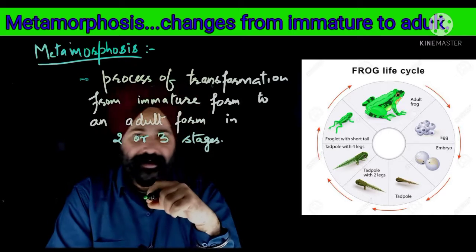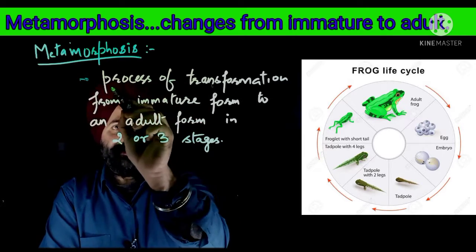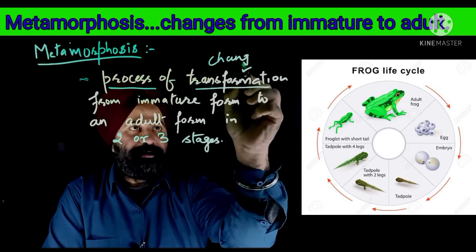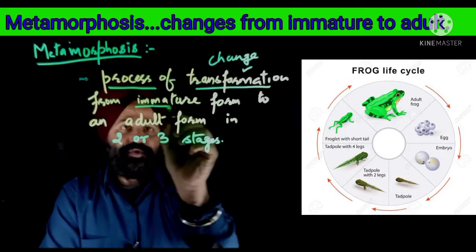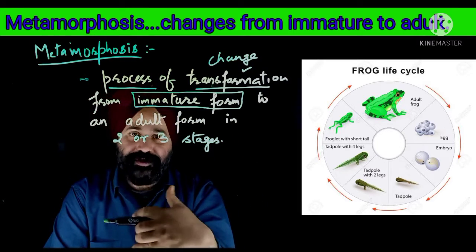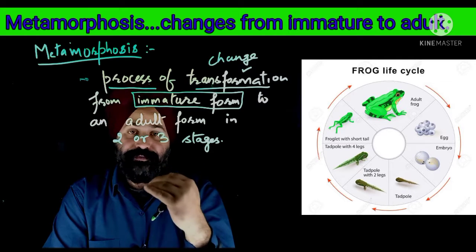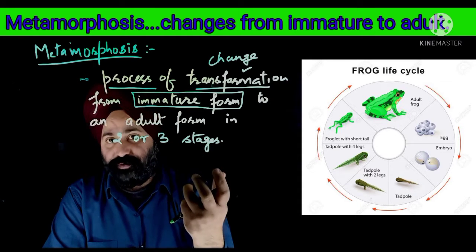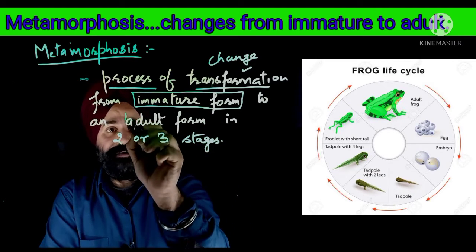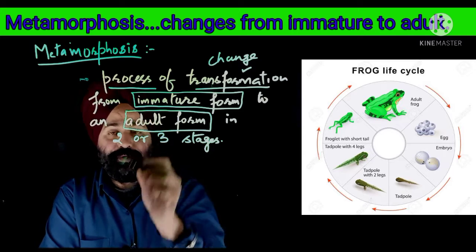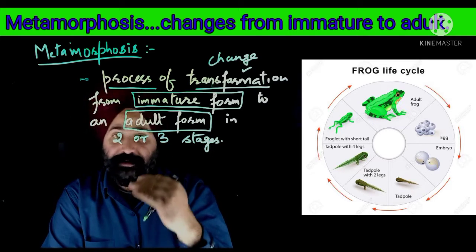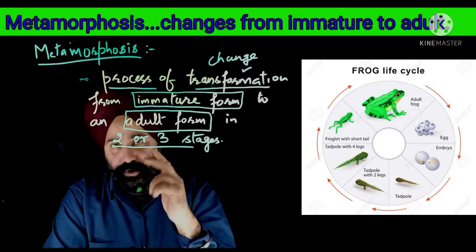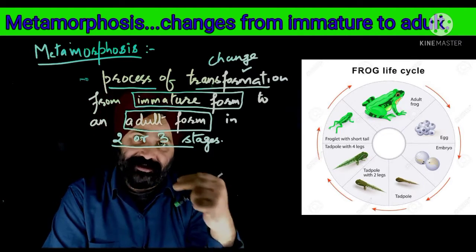Now we will explain it. It is a clear process of transformation — a change where an organism goes from an immature form to a mature form. This transformation into adult form is done through proper shape, and it happens in 2, 3, or 4 stages.